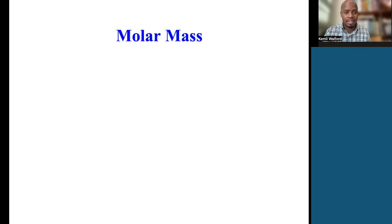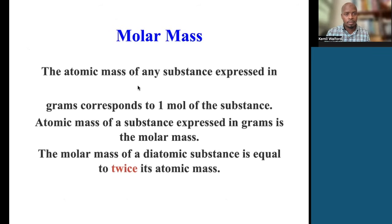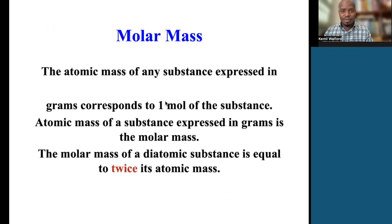One mole of a substance has what we call a molar mass. One mole of a substance contains the Avogadro's number, but it also has an associated mass. If it's an element, we go in the periodic table, look at the mass number for that element, weigh that out, and express it in grams. So here is your one mole of carbon: 12 grams.